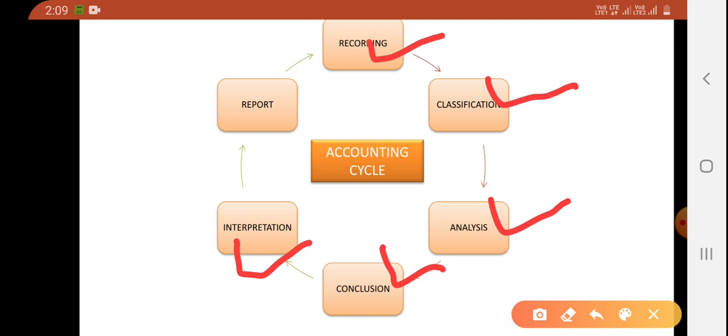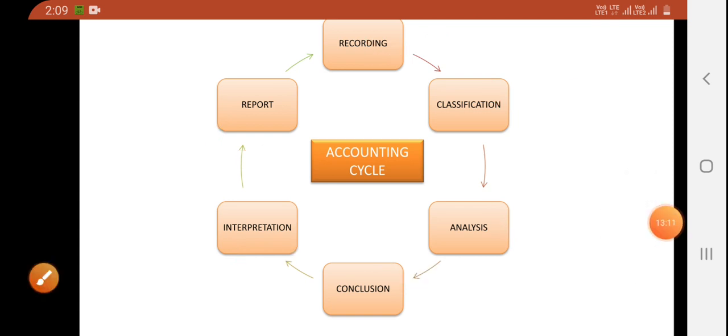After finding conclusions, you will interpret it. And after interpretation, what will you do in the last? Reporting will be done. Reporting means whatever you have, your authority will send to the owner or management staff. So that will be reported. This is the accounting cycle: recording, classification, analysis, conclusion, interpretation, and reporting.